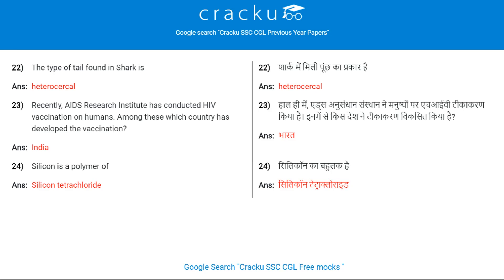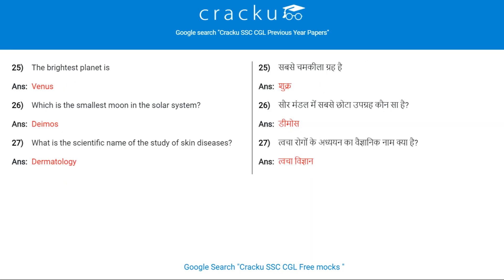Recently, an AIDS research institute has conducted HIV vaccination trials on humans. Which country developed the vaccination? India. Silicon is a polymer of silicon tetrachloride. The brightest planet is Venus.